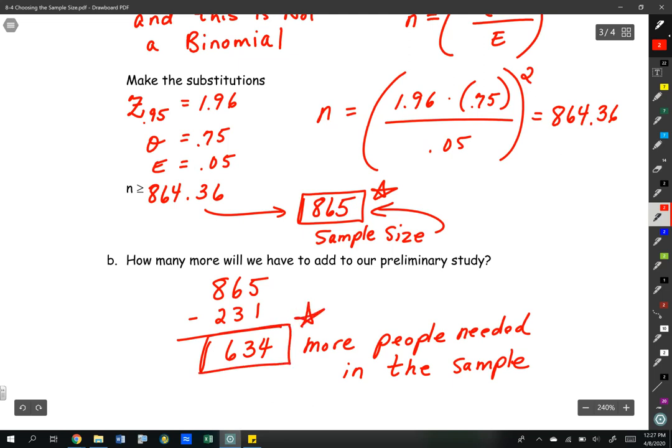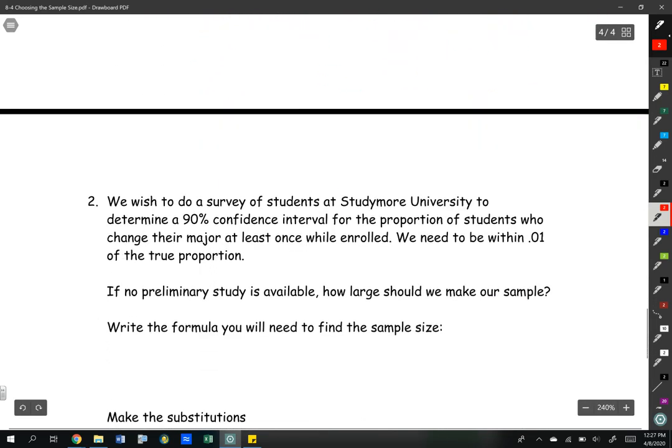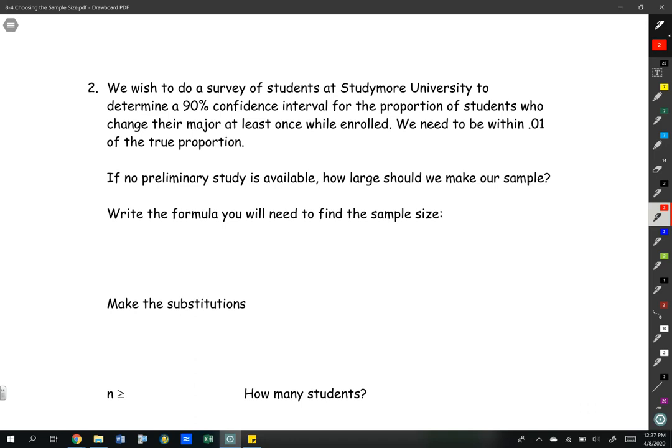Let's take a look at number two. We wish to do a survey of students at Study More University to determine a 90% confidence interval for the proportion, jackpot keyword right here. That means that this is a binomial, not a large sample. For the proportion of students who changed their major at least once while enrolled, we need to be within 0.01 of the true proportion. If no preliminary study is available, how large should we make our sample?